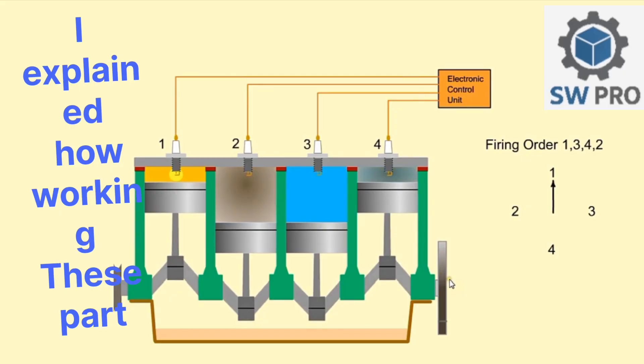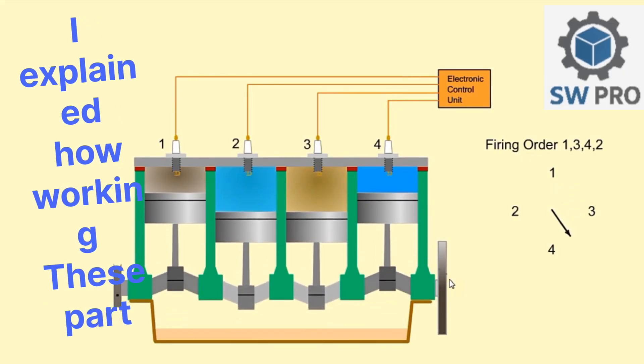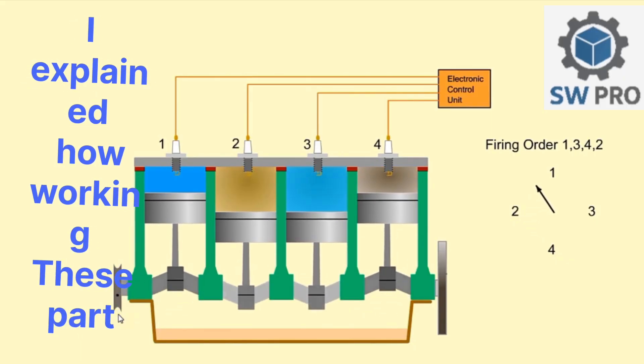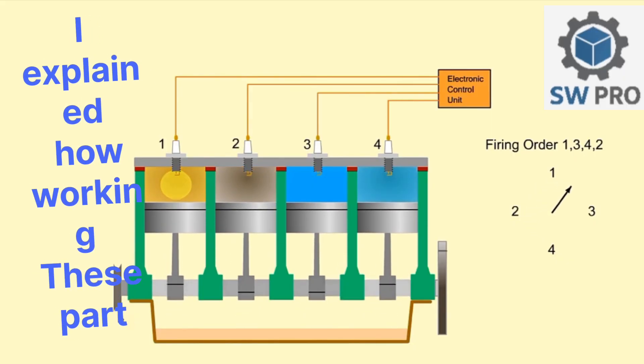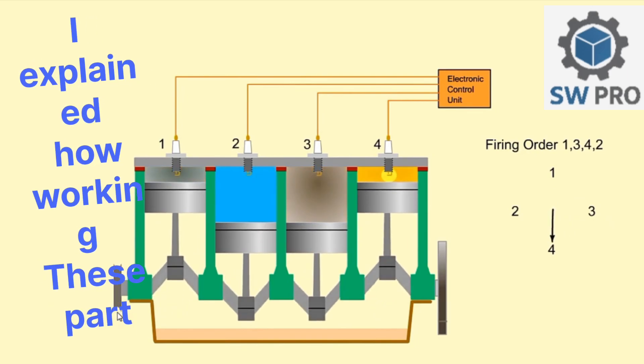A flywheel is attached to the end of the crankshaft to reduce pulsations and vibrations. A pulley is attached to the other end of the crankshaft, which can be used to drive ancillary equipment such as the alternator, water pump, or timing belt.